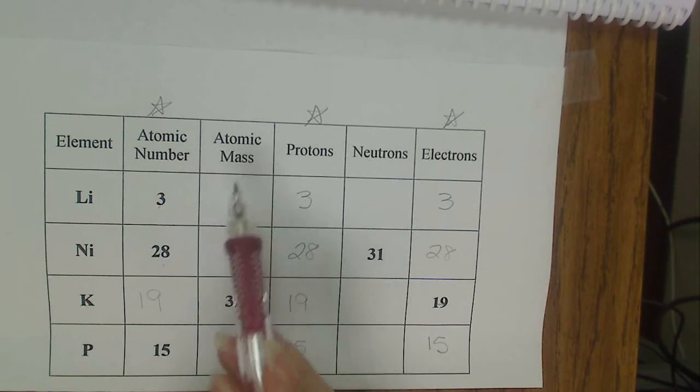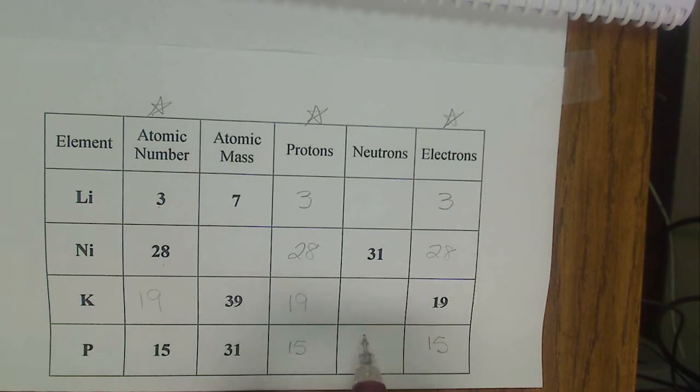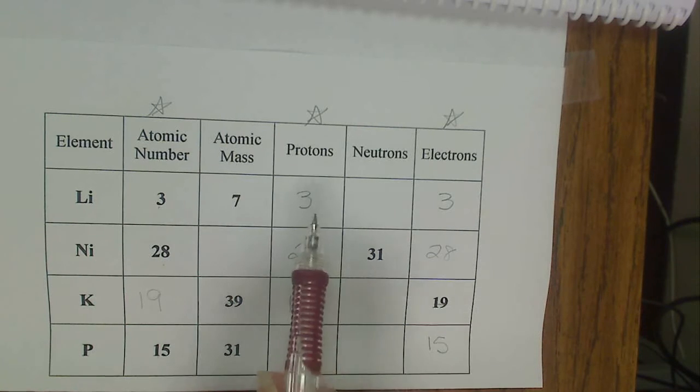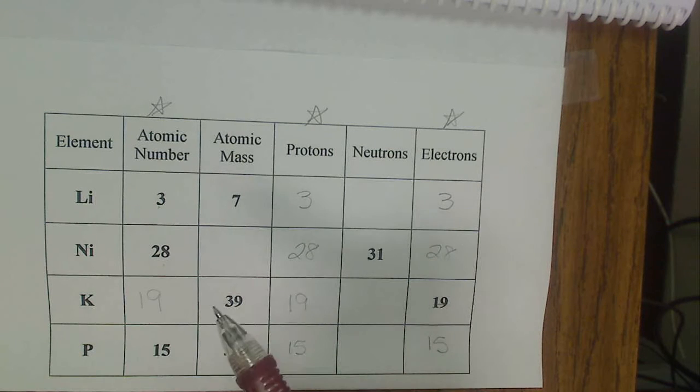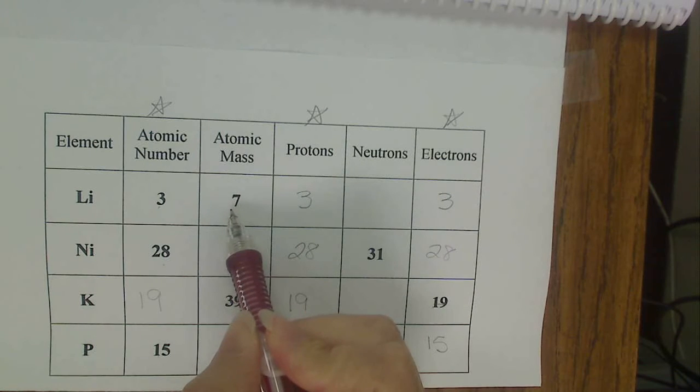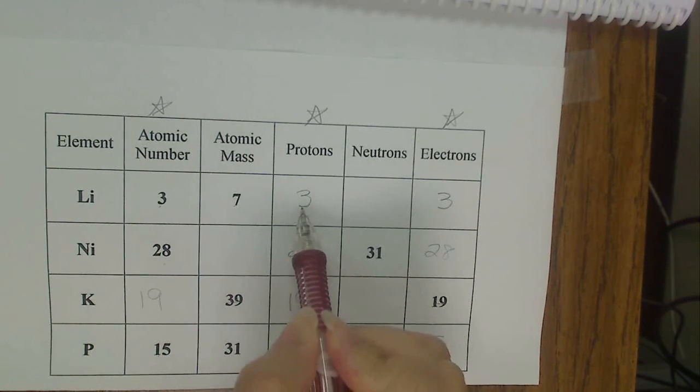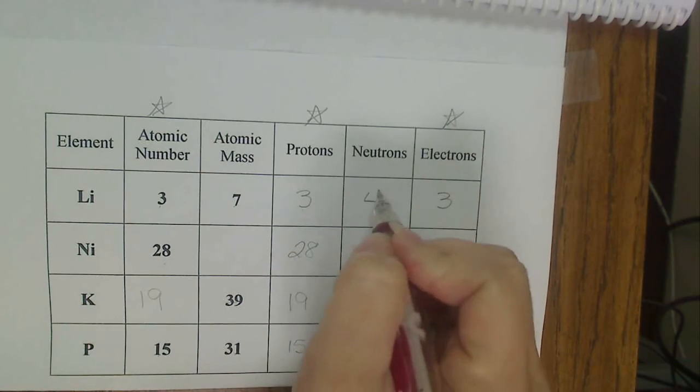The tricky part is when I'm trying to figure out the atomic mass or the neutrons. I'm going to have to do some math. I'm either going to add my protons and my neutrons to get my atomic mass, or I'm going to subtract my protons from my atomic mass. In this case, I'm subtracting. 7 minus 3 gives me 4 neutrons.